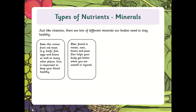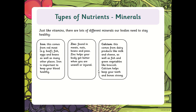Zinc is found in meats, nuts, beans, and peas. Zinc helps your body get better when you are unwell or injured. When we are ill, we need to make sure we're getting a good diet — maybe take some vitamins to help boost our immune systems. Calcium comes from dairy products like milk and cheese, as well as fish and green vegetables like broccoli. Calcium helps your teeth and bones grow strong. We could actually see from our experiment with milk — it didn't really do much to the egg; the eggshell remained more or less the same.